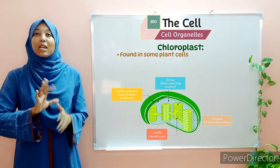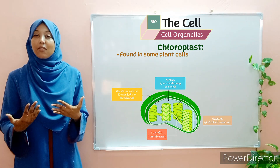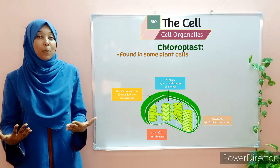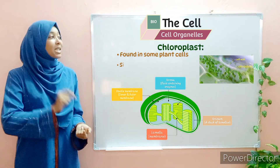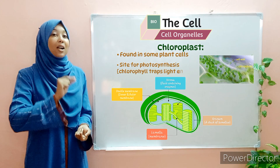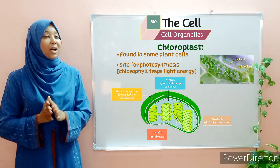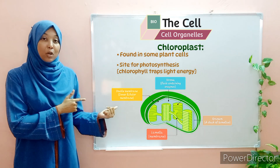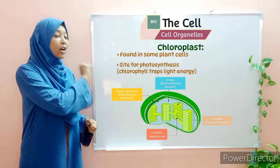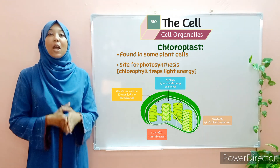A very easy visual hint you can rely on is the coloring of the leaf. If the leaf is green in color, then it has to contain chloroplast. The reason is because chloroplasts contain a green pigment called chlorophyll. Chlorophyll molecules are green in color, which give the leaves their distinctive green color. Chlorophyll molecules trap light energy for carrying out photosynthesis; therefore, the function of the chloroplast is to carry out photosynthesis.